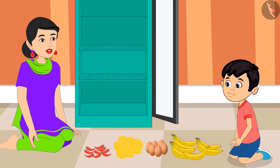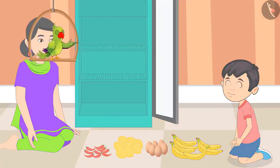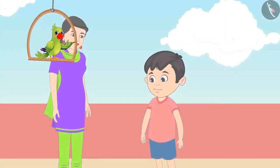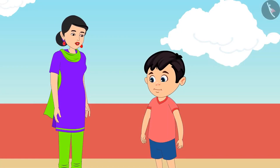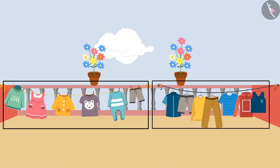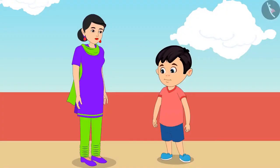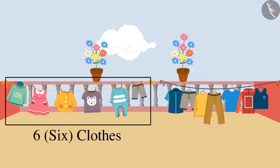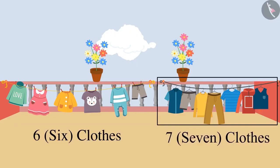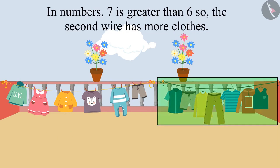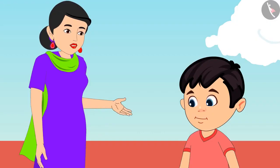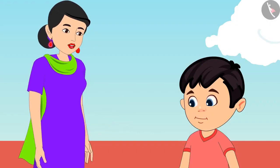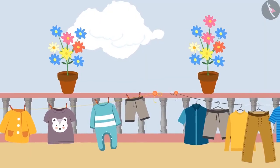Now Chotu and his mother go to the terrace to bring in the dried clothes. The mother asks: which of these two wires has more clothes? Chotu answers: there are six clothes on this wire and seven on that wire. In numbers, seven is more than six. Therefore, there are more clothes on the second wire. Very good Chotu, you are absolutely right.